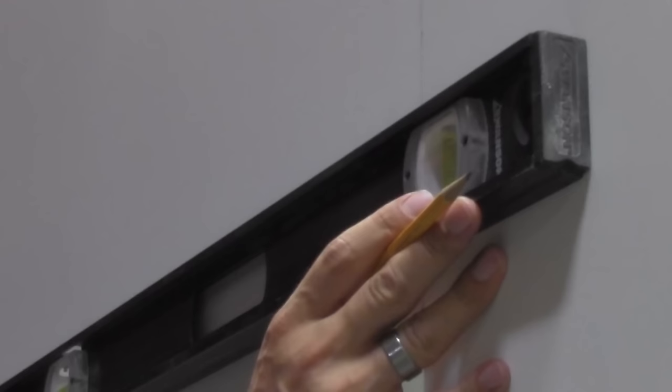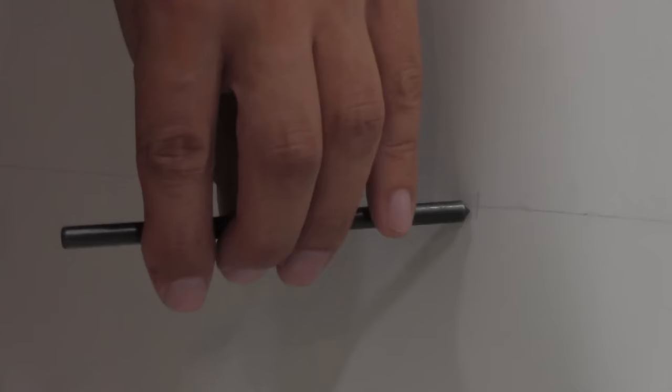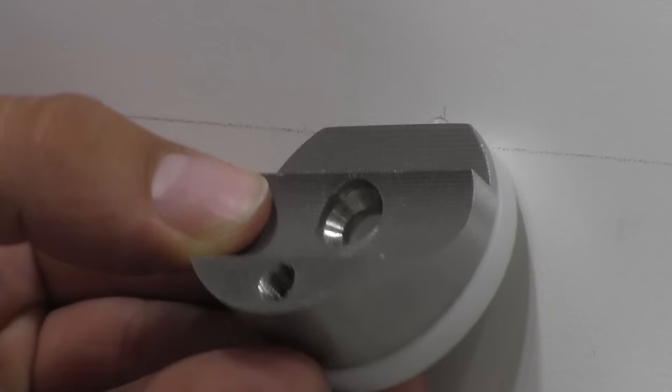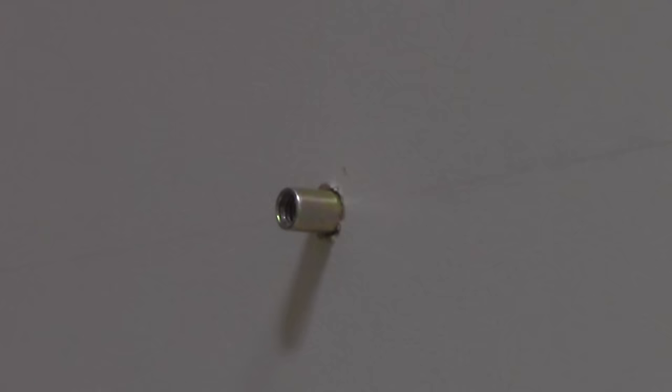Once you have your initial mark, you'll want to use a level to mark your other mounting positions. As for the spacing between brackets, just be sure to space evenly and mount into studs or wood blocking. Mark or punch your hole and drill at 5/16 inch diameter. Assemble the bracket with a nylon washer and back plate and insert your wood screw through the center opening for mounting.